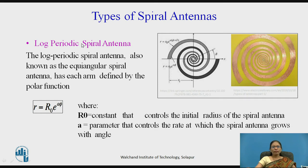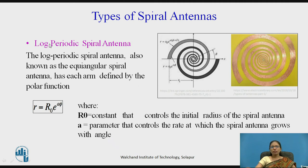Another type is the log periodic spiral antenna, also known as the equiangular spiral antenna. Each arm is defined by the polar equation R = R₀ e^(Aψ), where R₀ is a constant controlling the initial radius and A is the parameter controlling the rate at which the spiral grows with angle. You can see in the log periodic spiral that the width increases progressively. The actual antenna and its diagrammatic representation are both shown.